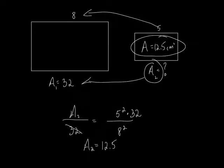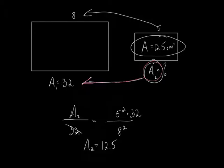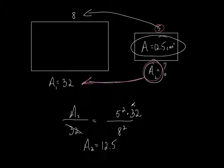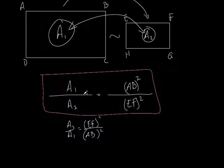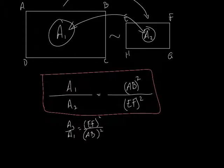So what did I do? I needed to solve for A2, so I put that on top. My formula says compare the areas, so I compare A2 to 32. Then compare the squares of the sides — so it's 5 squared over 8 squared. That's the formula: compare the areas to each other, then compare the squares of the corresponding sides.